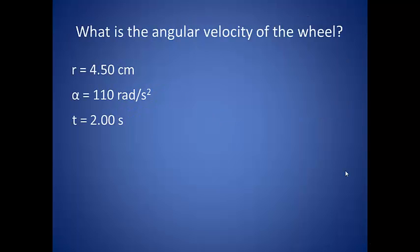Let's start with the angular velocity of the wheel. We were given three pieces of information: the radius of the wheel, the angular acceleration of the wheel, and the time.